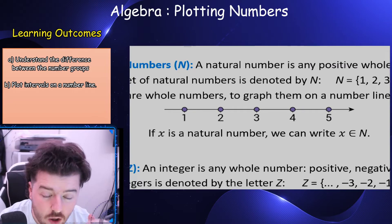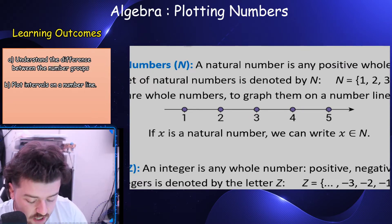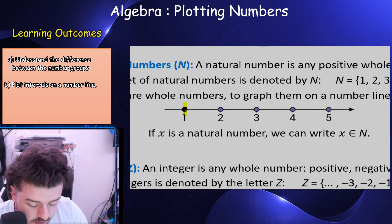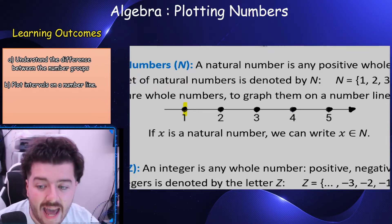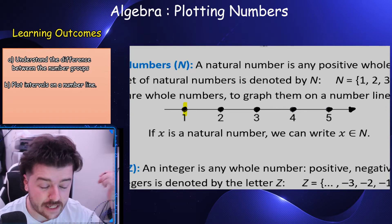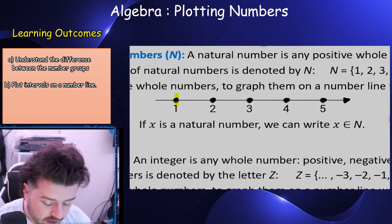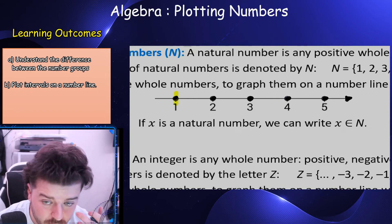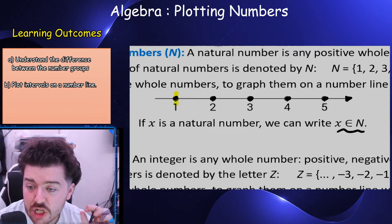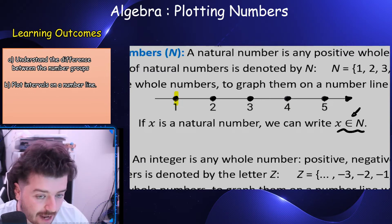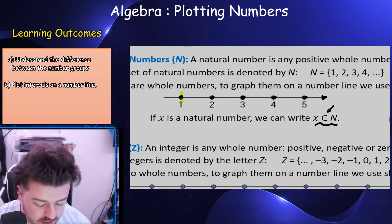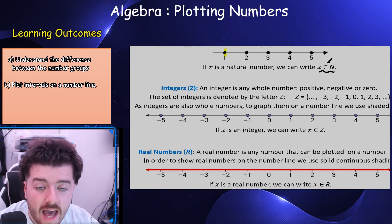We graph natural numbers on a number line as dots: zero, one, two, three, four, five — and the little arrow says we're going on forever. If x is a natural number we write it as x is an element of N. That symbol means 'element of' or 'it's in the set of natural numbers.'